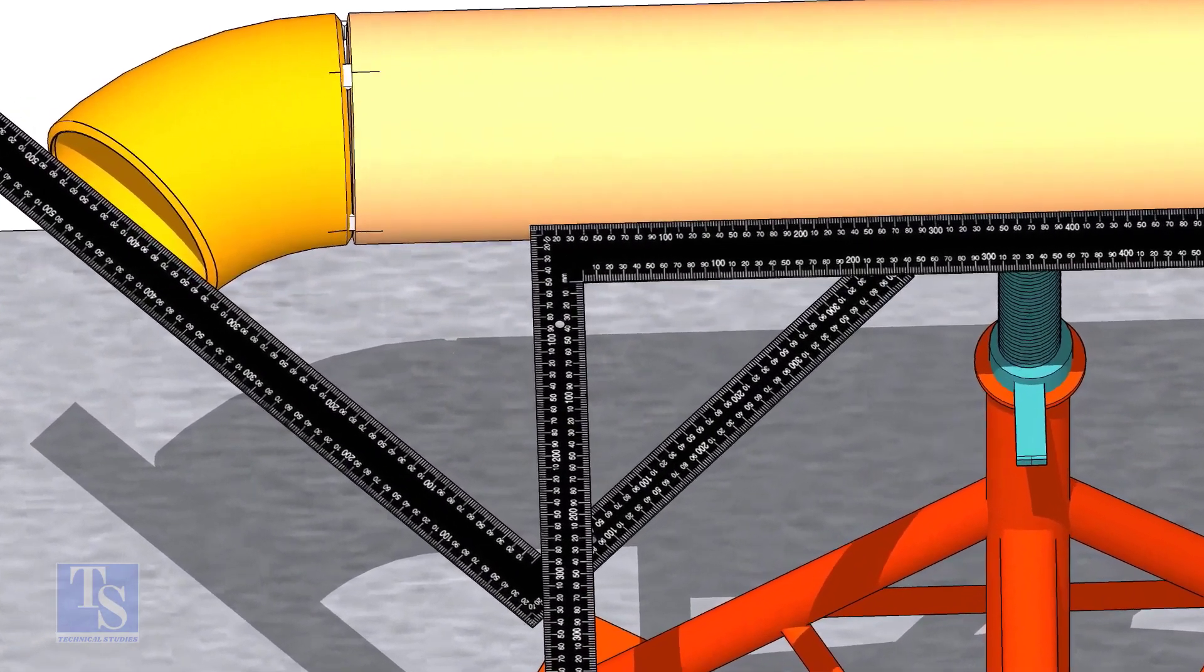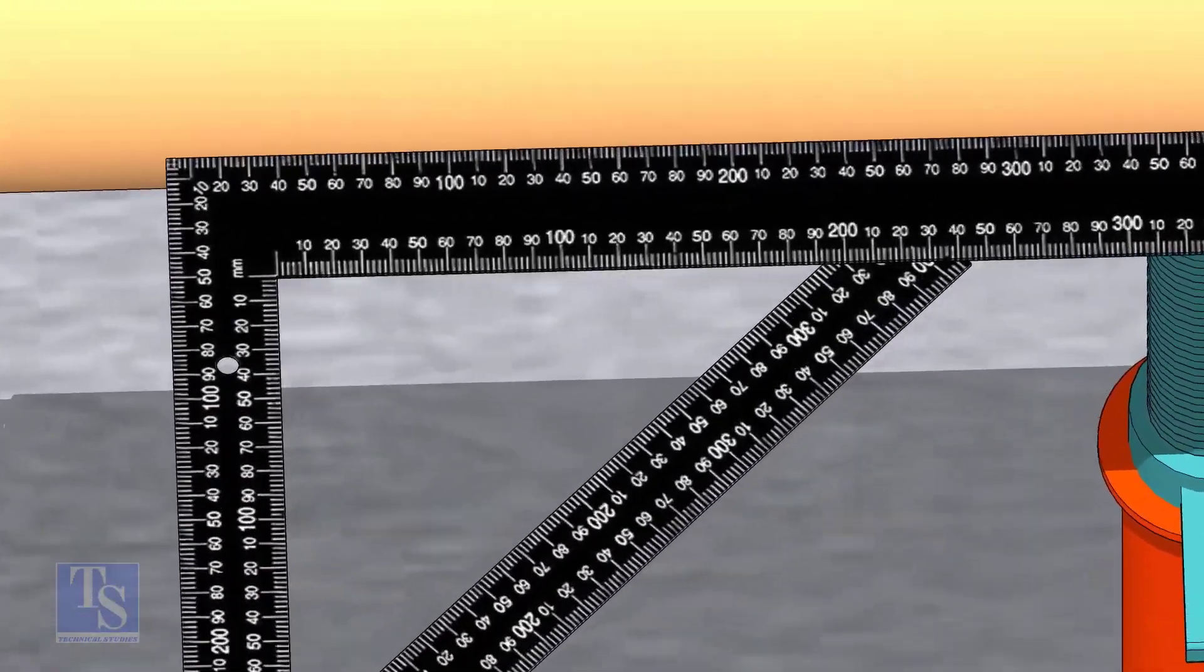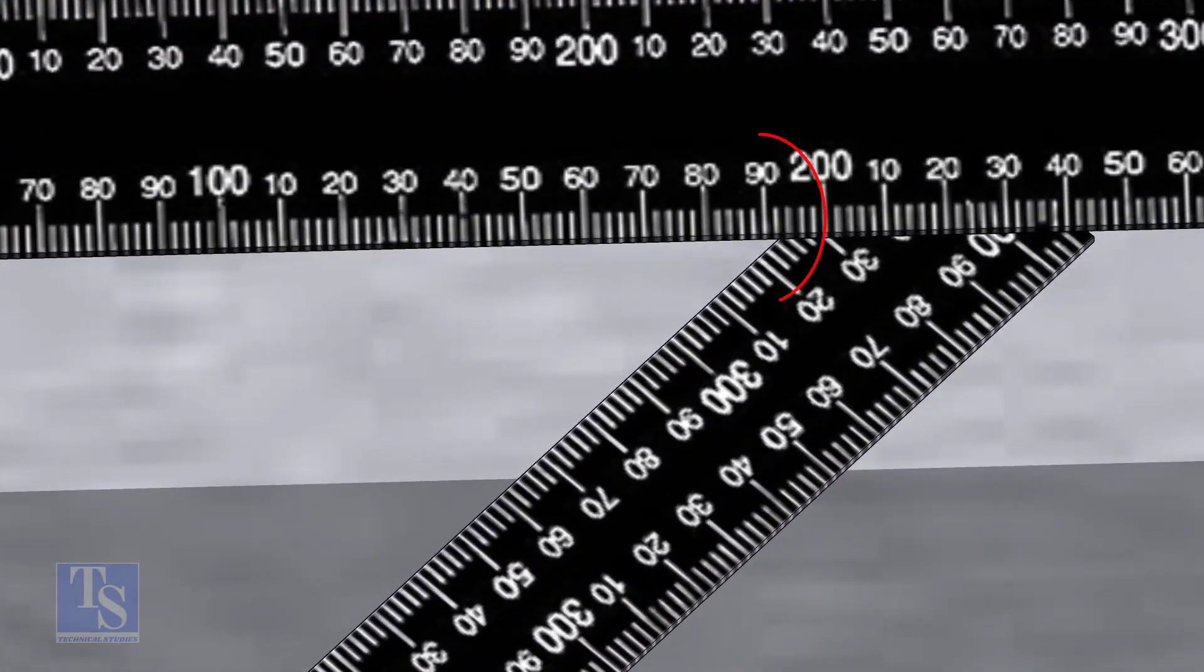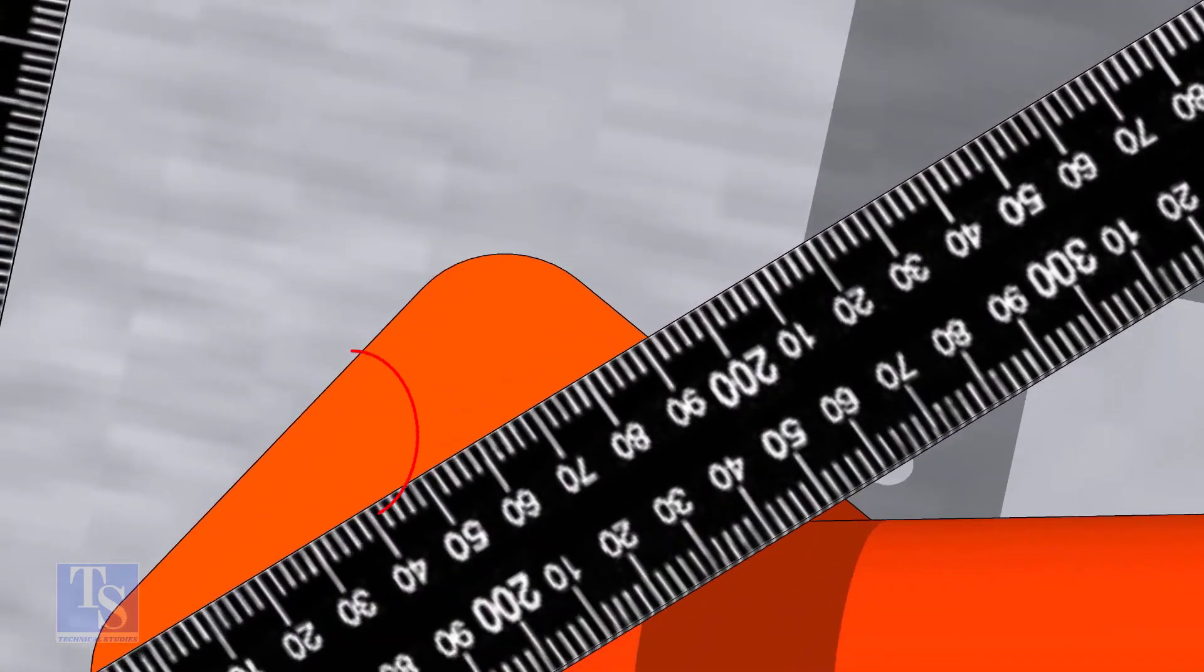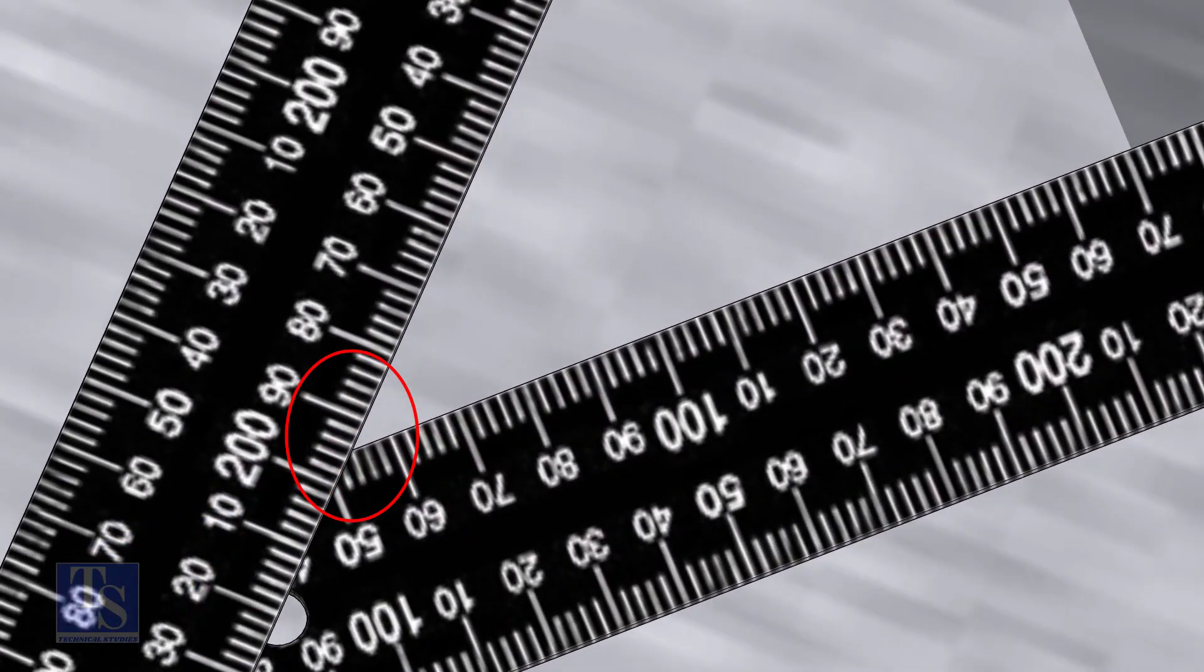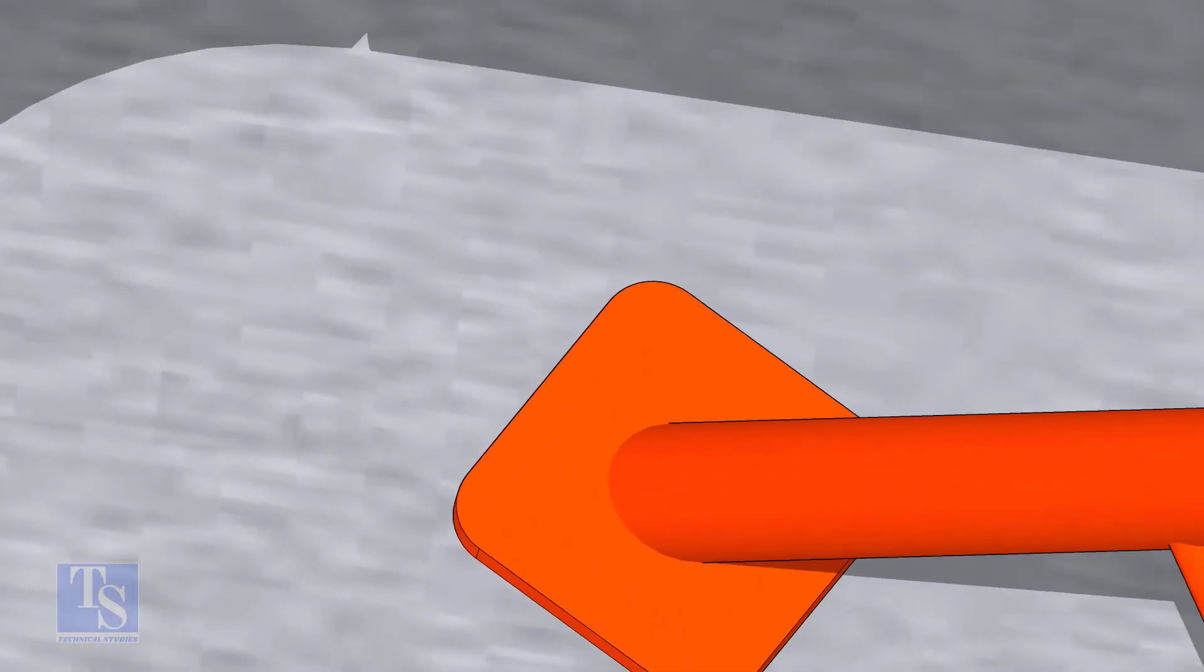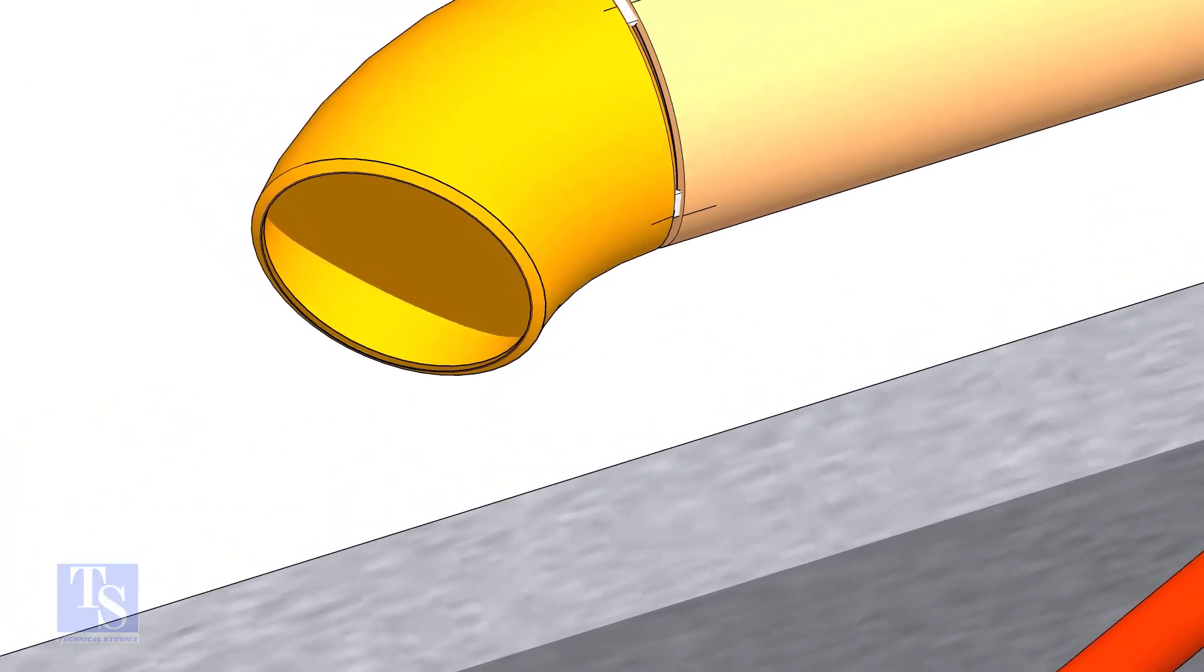Check the measurements. Note down the readings. If both readings are the same, the elbow face is exactly 45 degrees to the pipe.